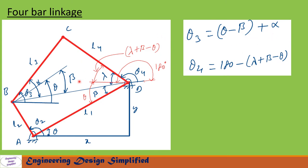Similarly, looking at this portion of the diagram, since this angle is theta, the angle from here to here is theta, this angle is beta, and this is lambda. The angle from here to this red line is 180 degrees, and this is theta 4. So from this diagram: theta 4 equals 180 minus lambda plus beta minus theta.